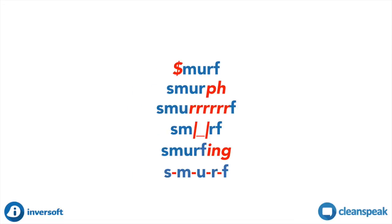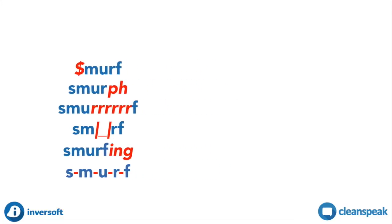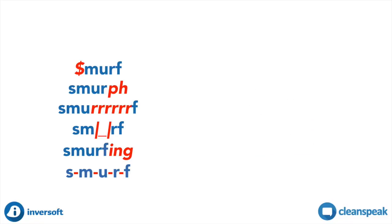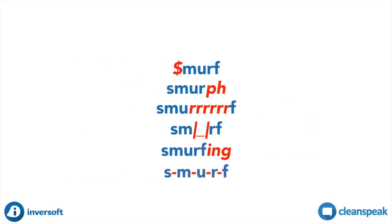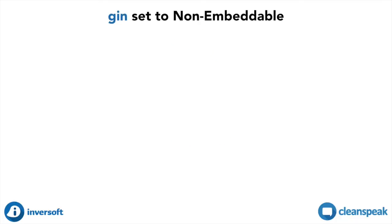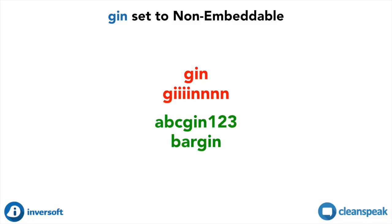The Non-Embeddable filter mode means find this entry and all the possible crazy combos from baked-in intelligence, as long as the entry is not embedded next to any other letters or numbers. All of these will be filtered if Smurf is set to Non-Embeddable, but the moment a letter or number is next to it, the match is rejected. An example of an entry that could be Non-Embeddable is the word gin. By itself, it's clear that gin — or even gin with repeat characters — is an alcoholic beverage. It's unlikely that a user would try to get the word gin past a filter by embedding numbers or letters next to it.